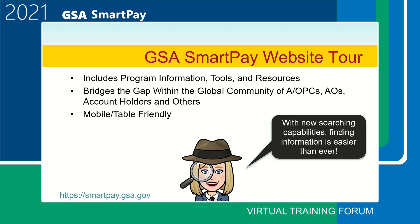Just last year we modernized the look and feel of the website to keep up with trends in the industry. The site is adaptable to all screen sizes, including being easily accessible from a mobile device or tablet. The website content includes program information, tools and resources. It supports our global community of program coordinators, approving officials, account holders, businesses, state and local governments, and more. One of the greatest enhancements is the new searching capability, which makes finding information easier than ever.